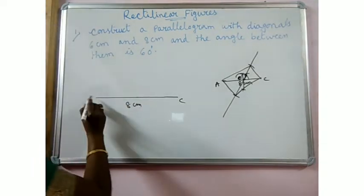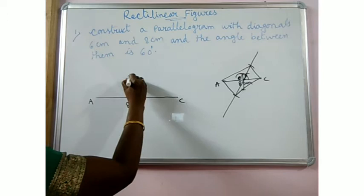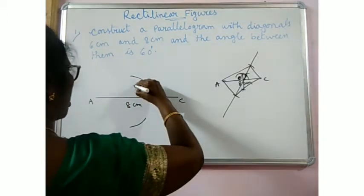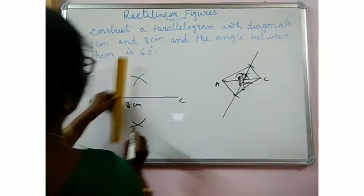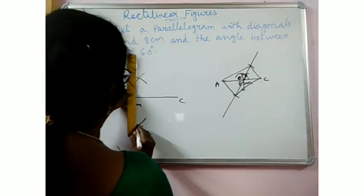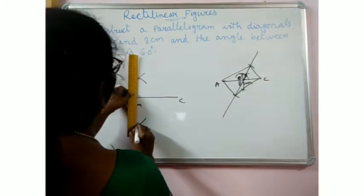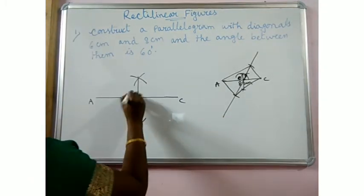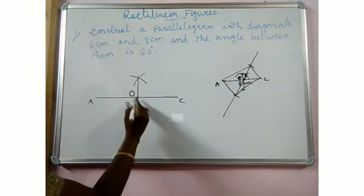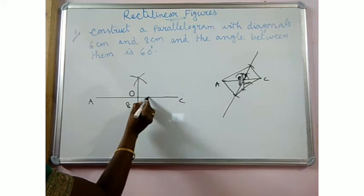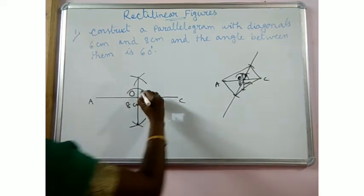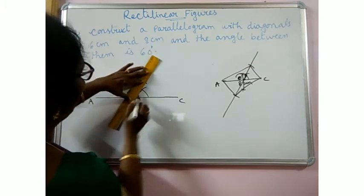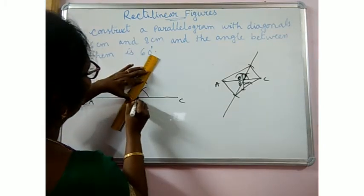You have to bisect AC. From A, mark arcs on this side and also this side. From C also, mark arcs on this side and this side. Join them — you will get the midpoint. Let me name this as O. Now at O, construct a 60 degree angle. Give an arc, and from here give an arc — that is 60 degrees. From O, draw the line both sides.